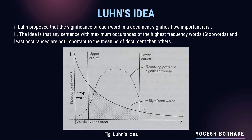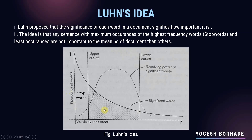On the left side of the diagram, there are words with least occurrences that are present in the sentence but do not play an important role, so they are also neglected. We are only left with the middle section, between the upper cutoff and the lower cutoff, which contains the significant words. The power of these significant words is referred to as the resolving power of significant words, represented by dotted lines in the graph.